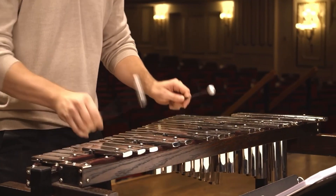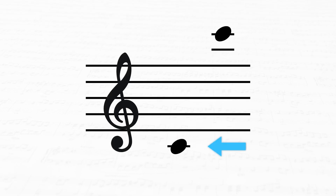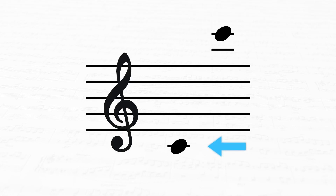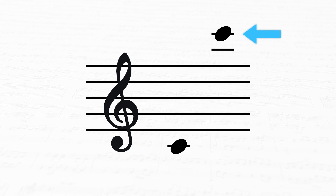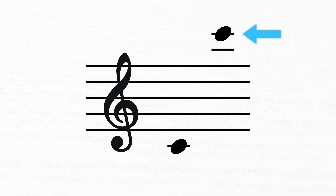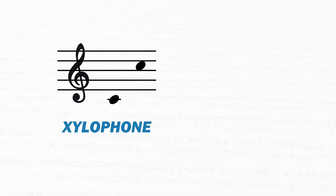The same thing is going to apply to glockenspiel. The only difference for that instrument is that it's a two octave displacement and not a one octave displacement, meaning that when you read middle C on the page you're actually playing or hearing C6, which is two octaves above C4.